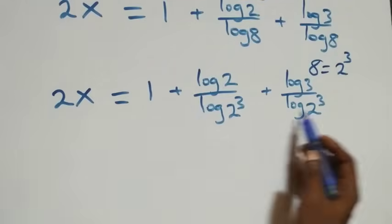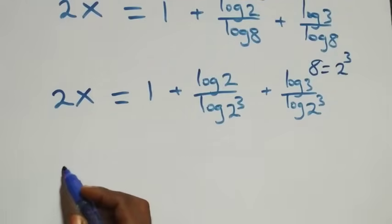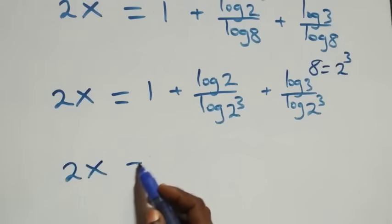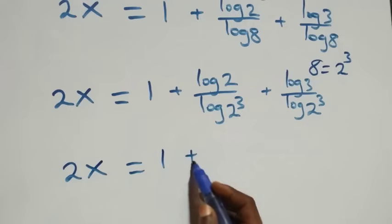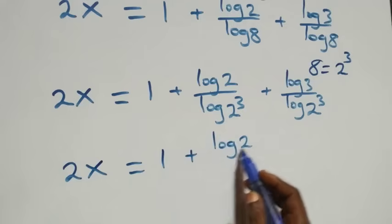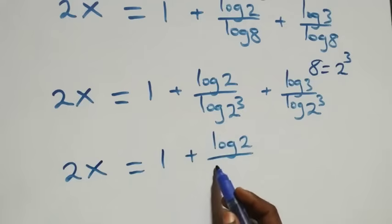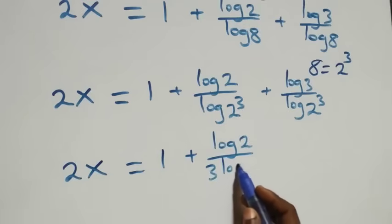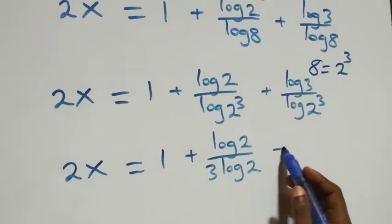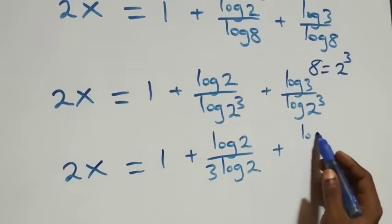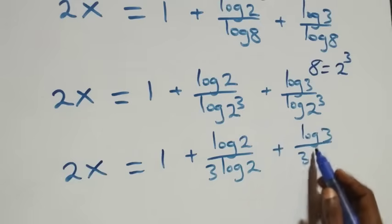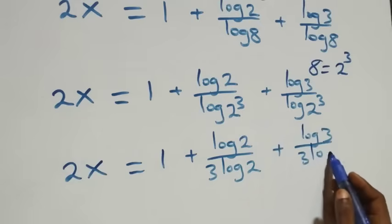Applying the power rule of logarithms, the 3 comes out in the denominator, and we have 2x equals 1 plus log 2 over 3·log 2 plus log 3 over 3·log 2.